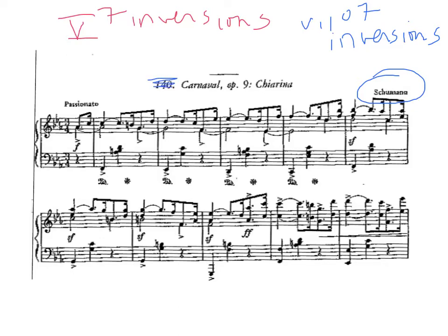And the vii°7 and its inversions. To start off, I have a piano piece here by the 19th century composer Robert Schumann. The piece is called Carnival, and these are little character piano pieces, things that you might hear or see at a Carnival. It's from the piece Carnival, opus 9.